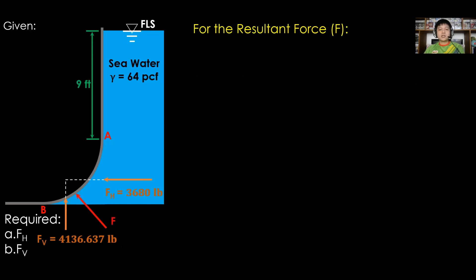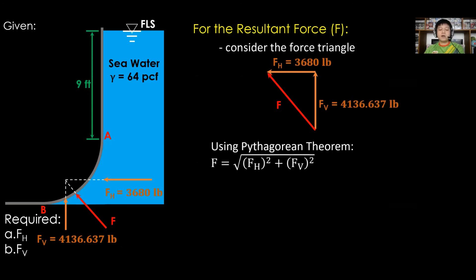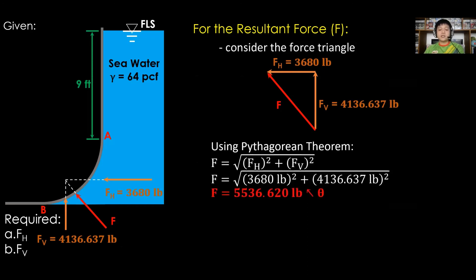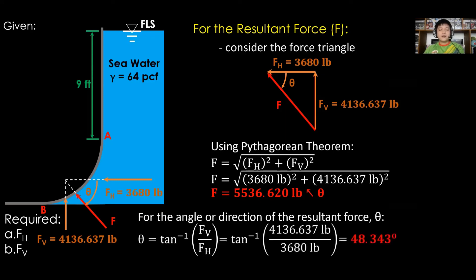For the resultant force F, consider the force triangle and use the Pythagorean theorem. The square root of the sum of the squares of the components gives F equal to 5,536.620 pounds, sloping up to the left. The angle theta with respect to the horizontal is the inverse tangent of F sub V over F sub H. Substituting the values, the inclination is 48.343 degrees.